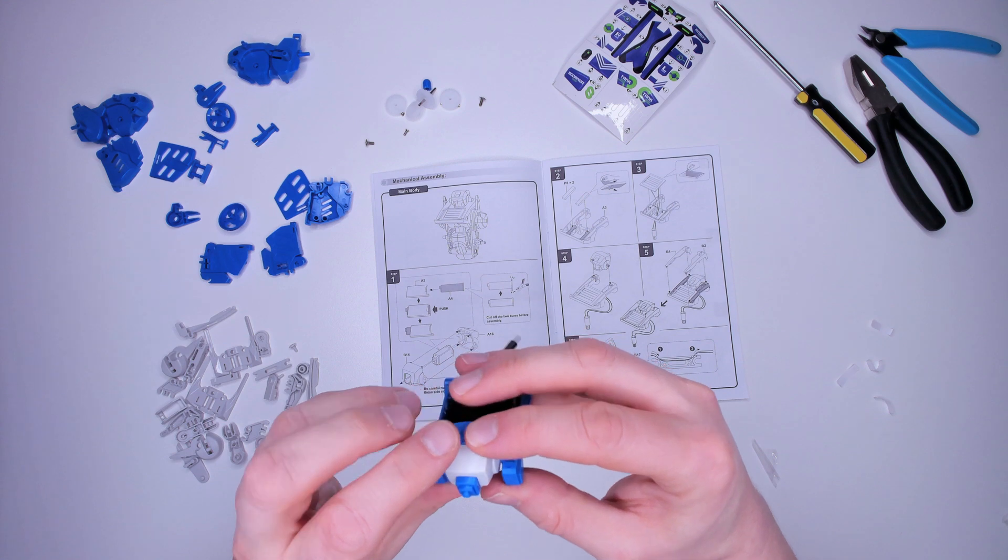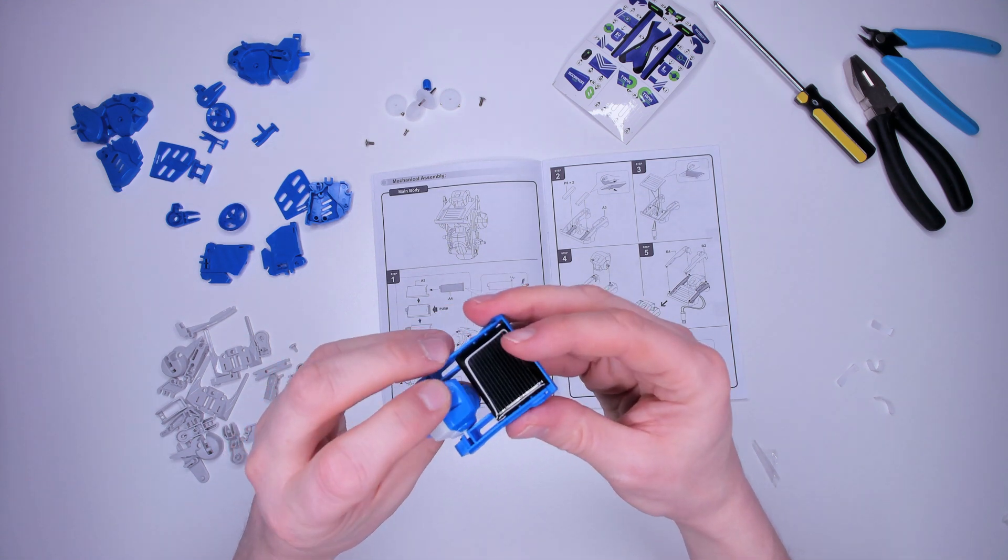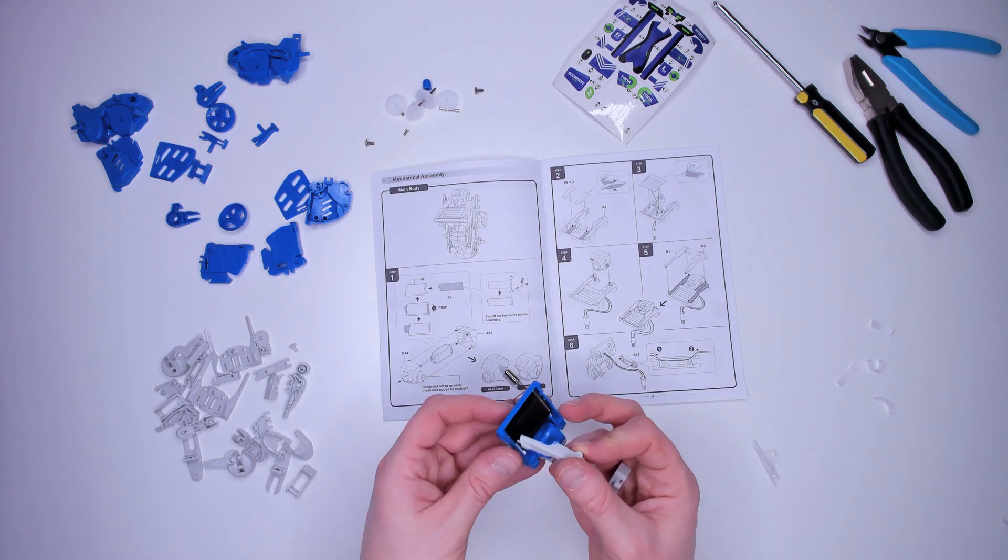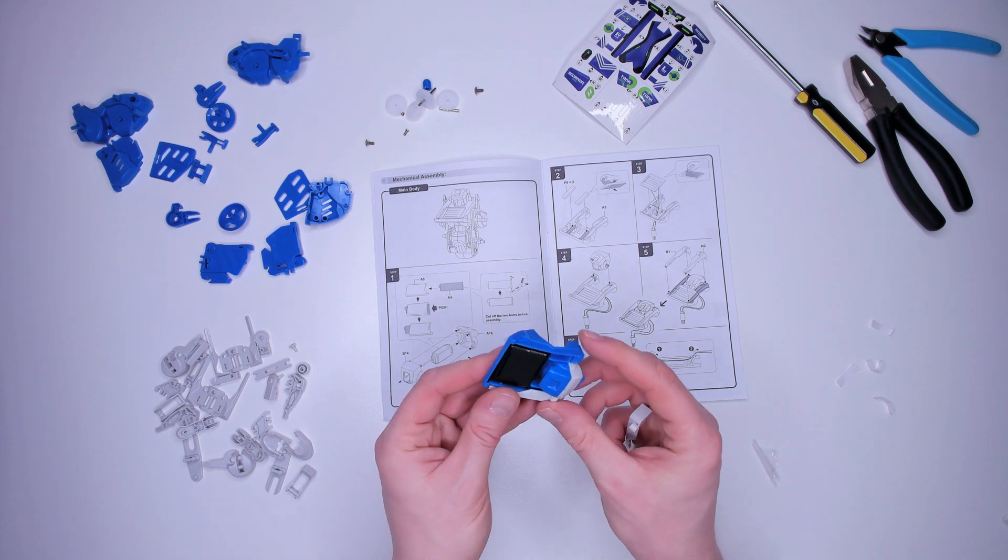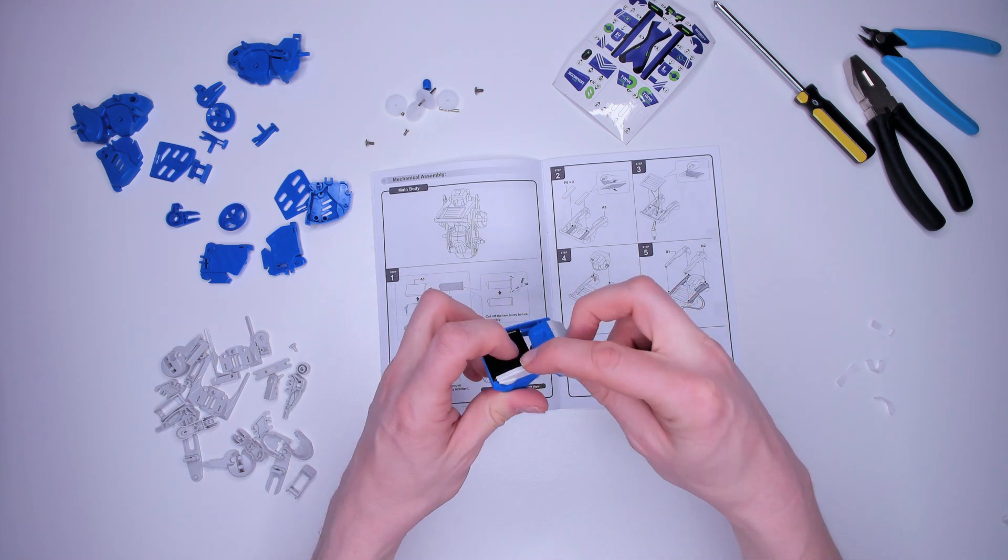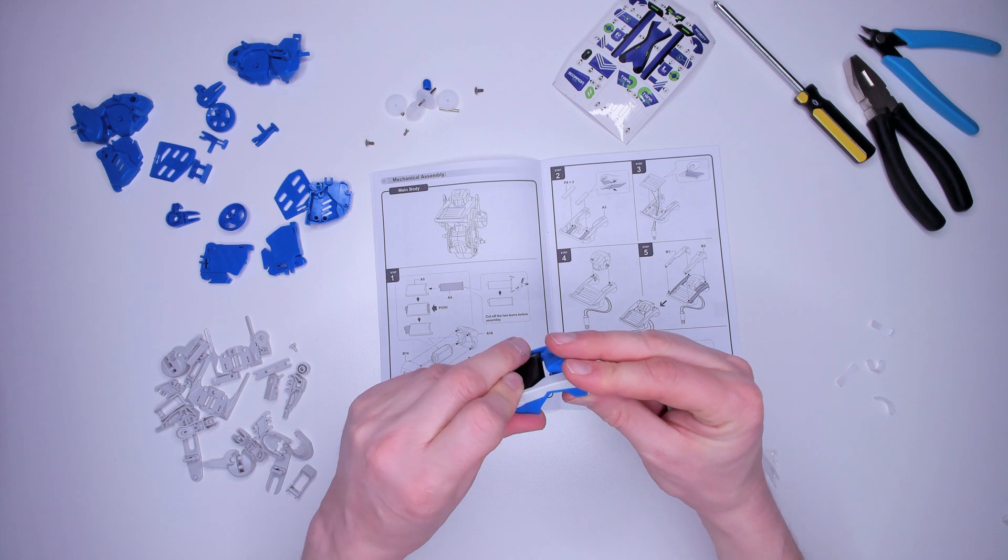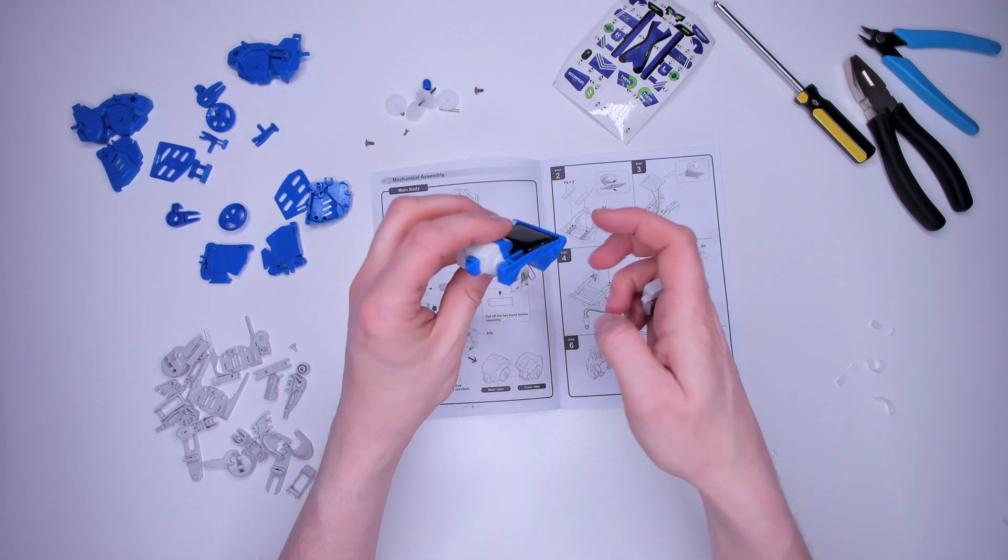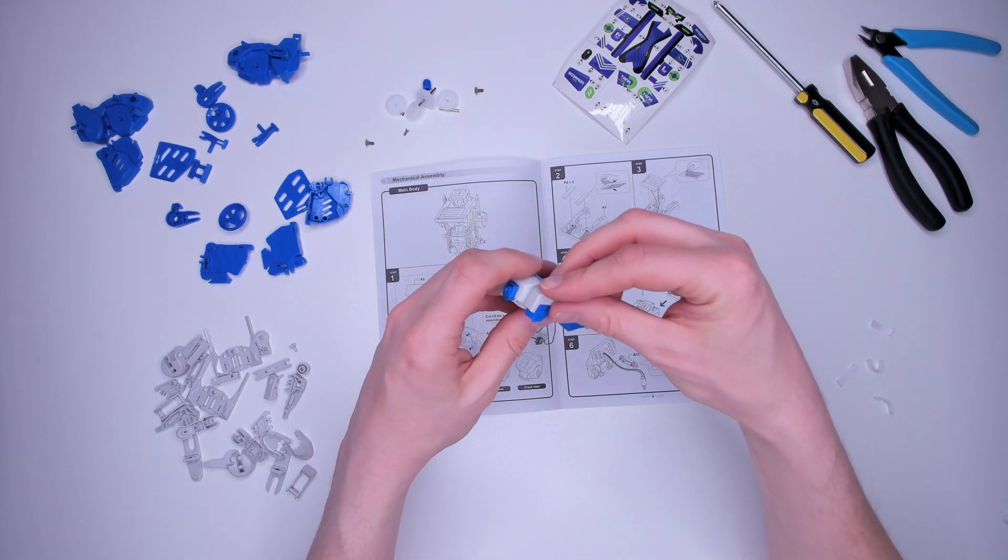Now I attach the first part of the head to the solar panel assembly. Click. Click. Two side pieces attached now. If I can work that out. Here. Click. And on the other side. Click.